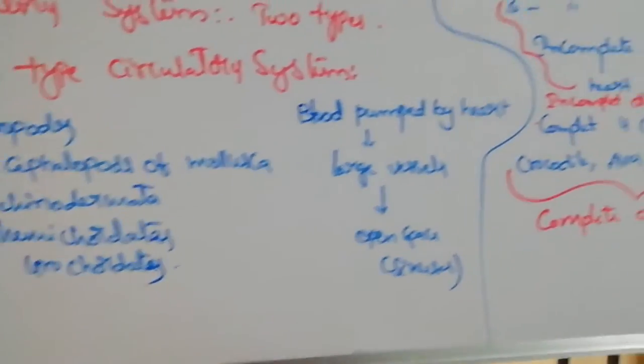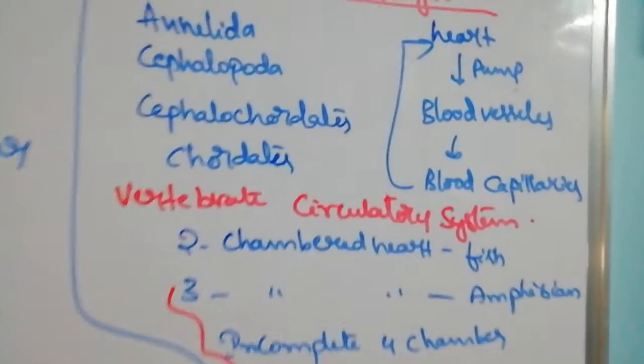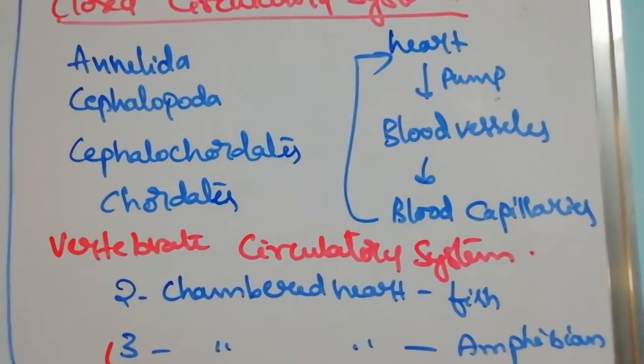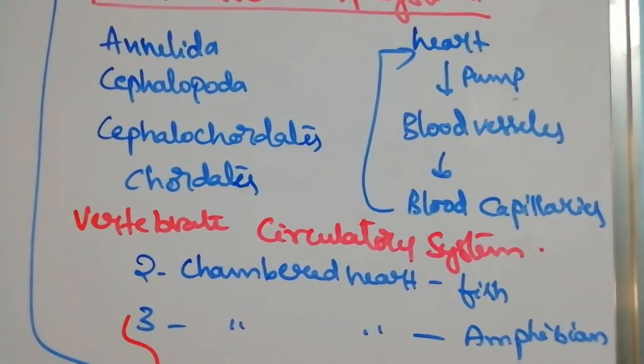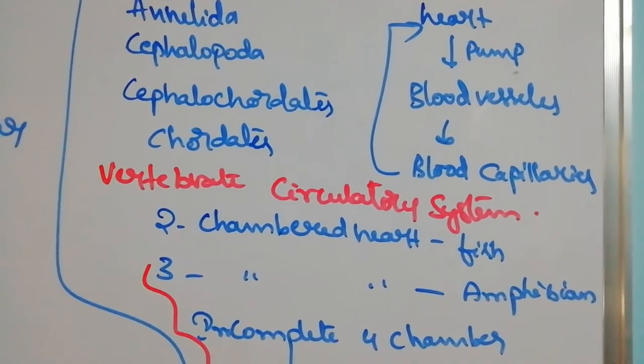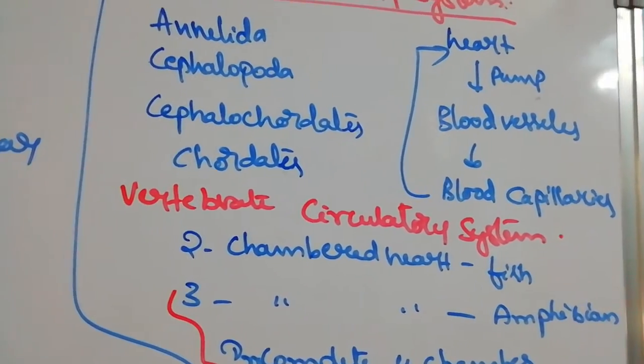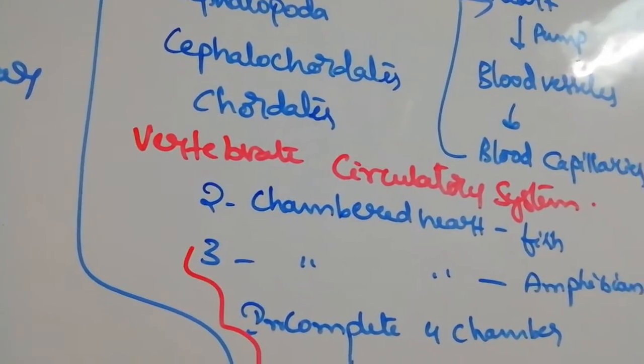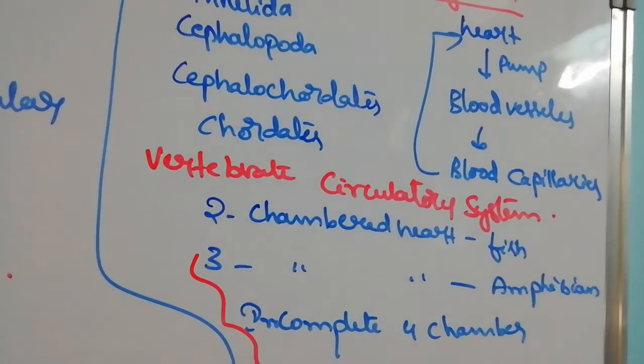Next, closed type of circulatory system. Here the heart is pumping blood which enters blood vessels like arteries and veins and blood capillaries, and then re-enters the heart. Here more pressure is present, pressure requirement is higher.